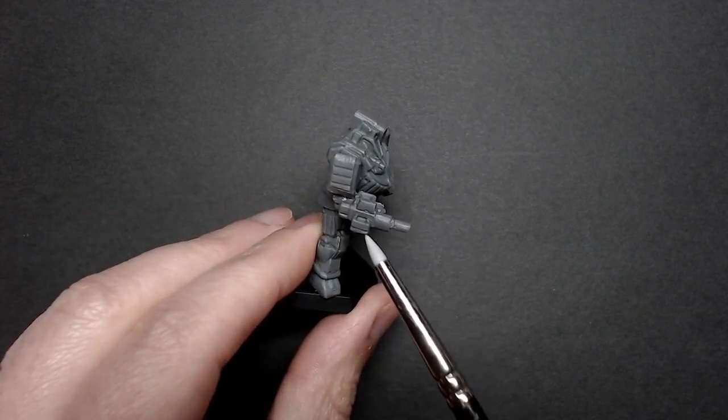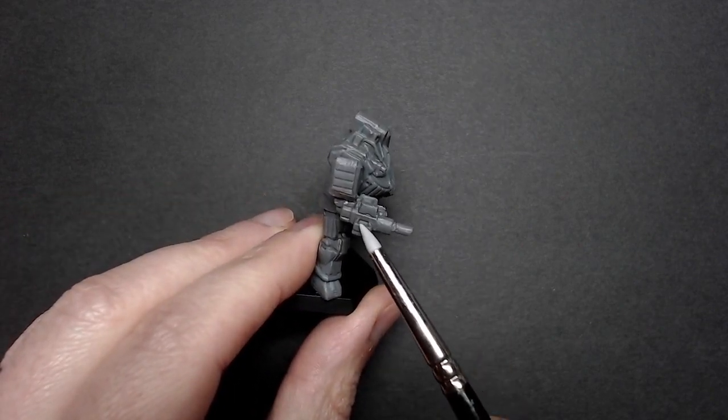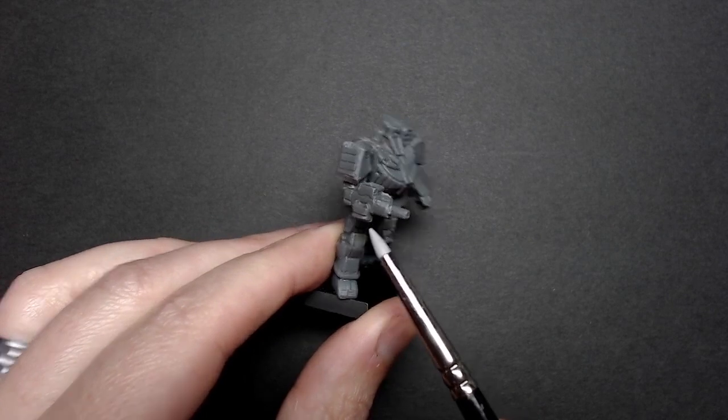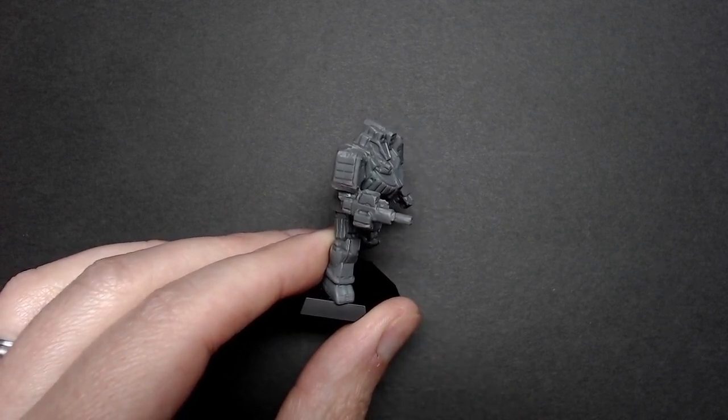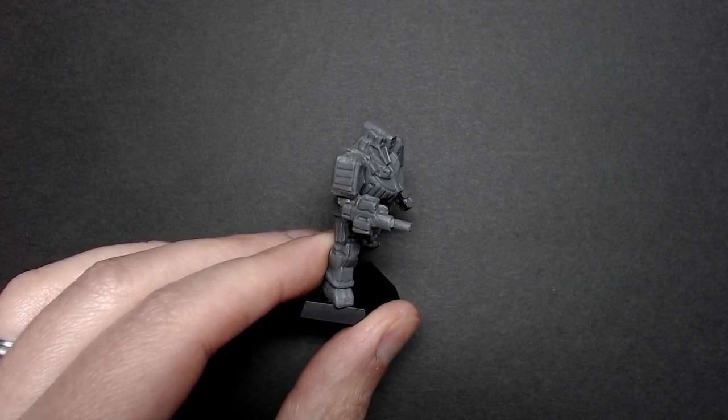To do the modification, the autocannon here has got a breech as well as what looks kind of like a magazine. So that's kind of the area I wanted to work with and that was my logic behind what I wanted to do.